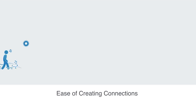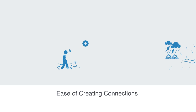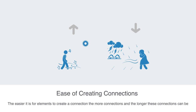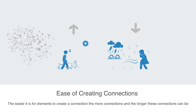If we turn this coupling parameter up or down, thus requiring the nodes to exert more or less resources in order to create a connection, we would expect the level of integration within the network to increase or decrease respectively. The easier it is for an element to create a connection, the more connections there will be and the longer these connections can be, thus working to integrate the entire system.